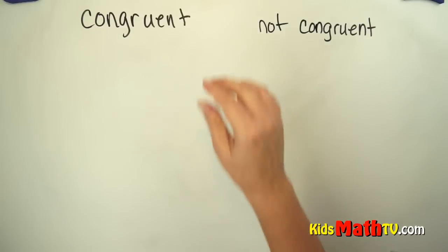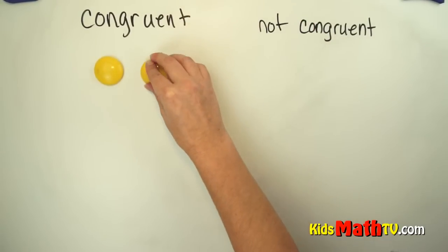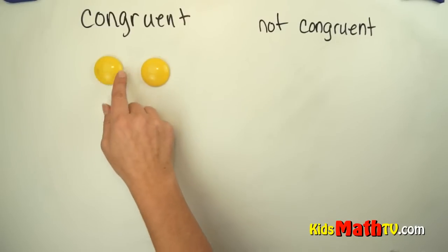For example, this shape is congruent to this shape. It is the same shape, it's also the exact same size.